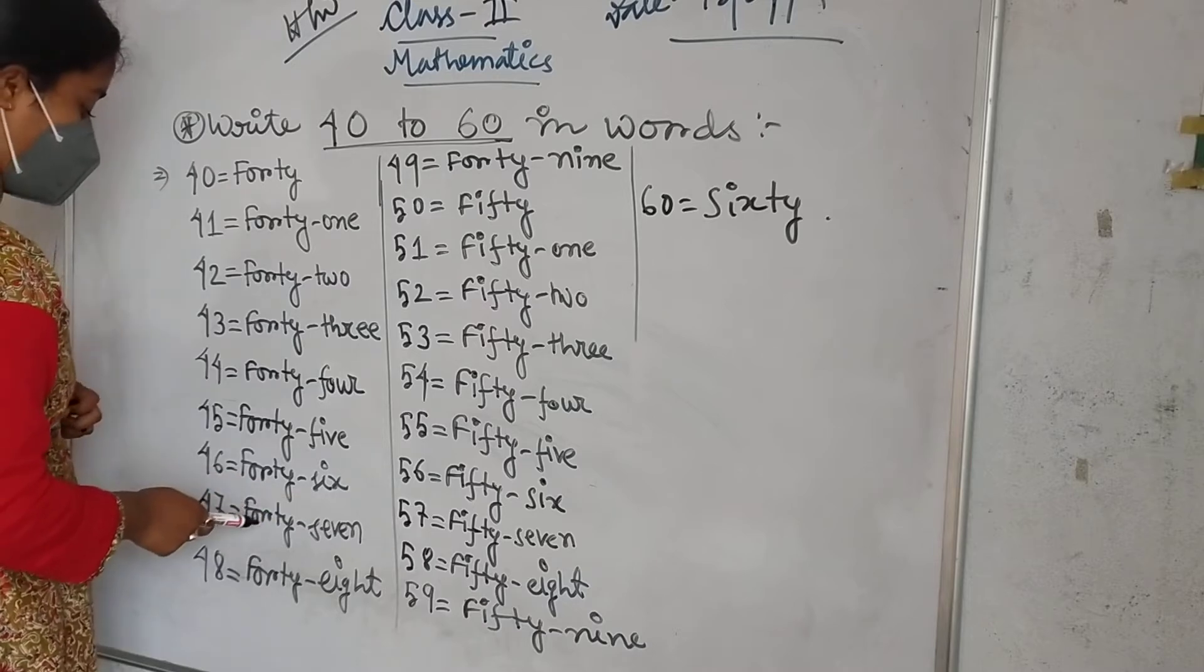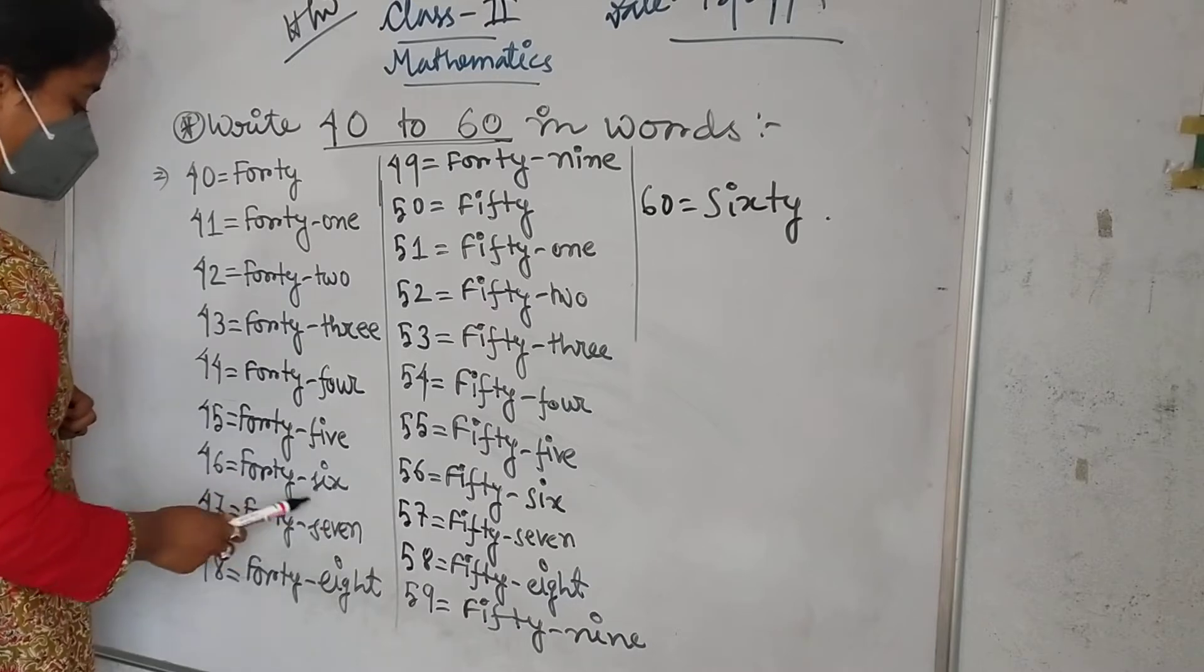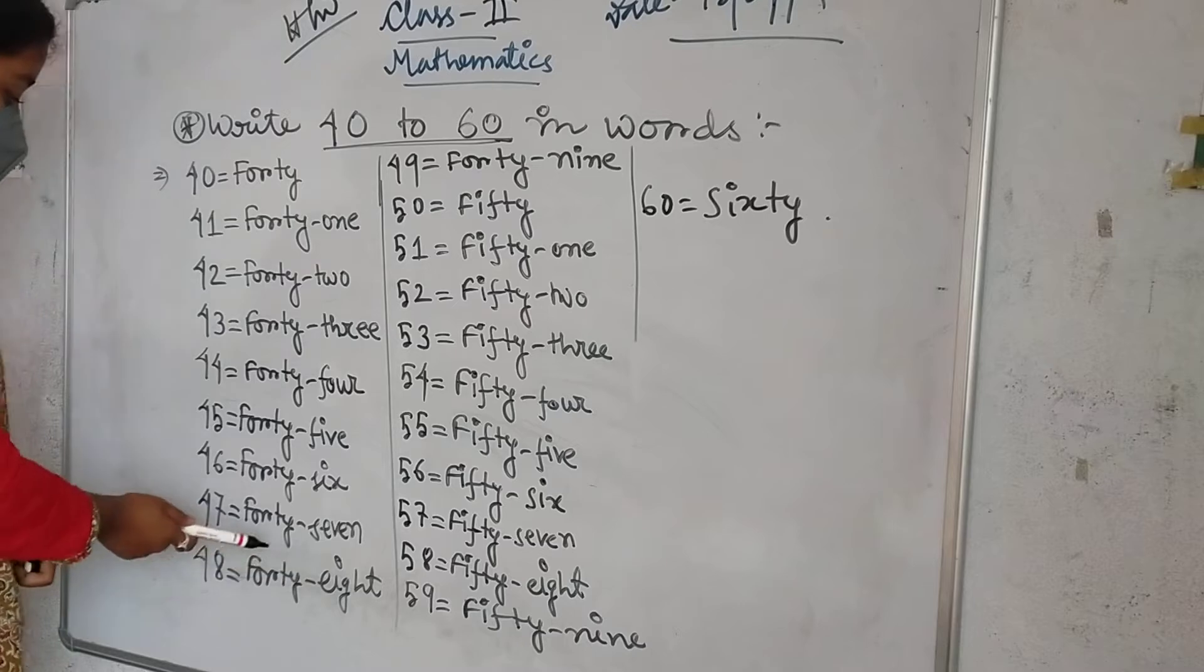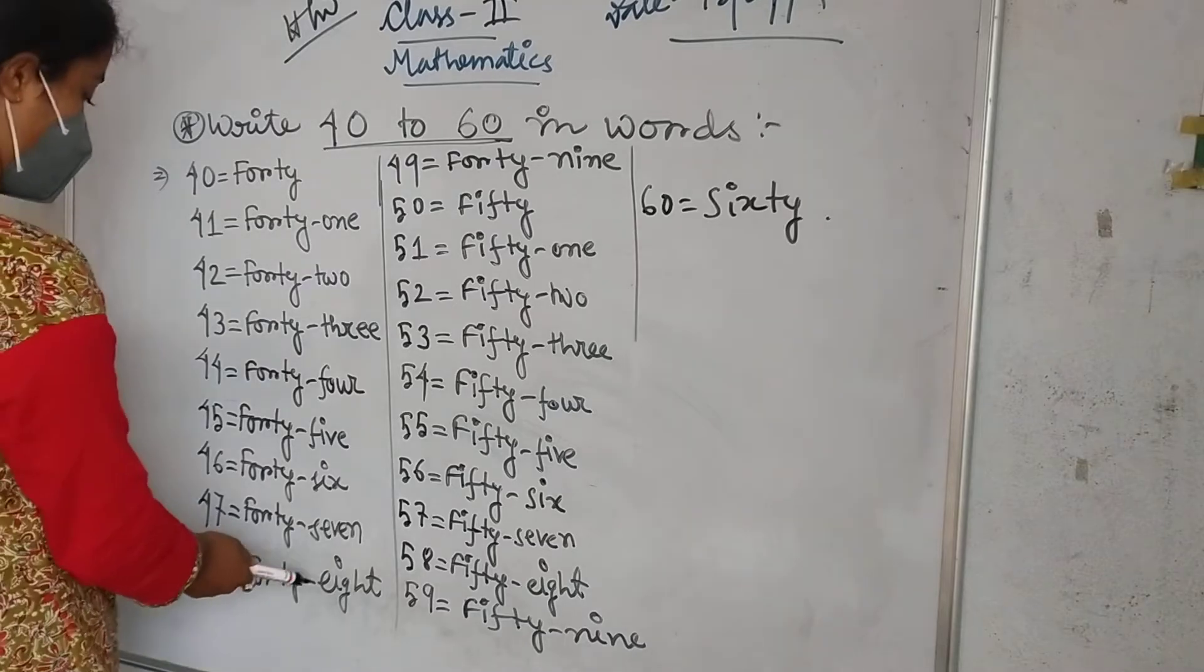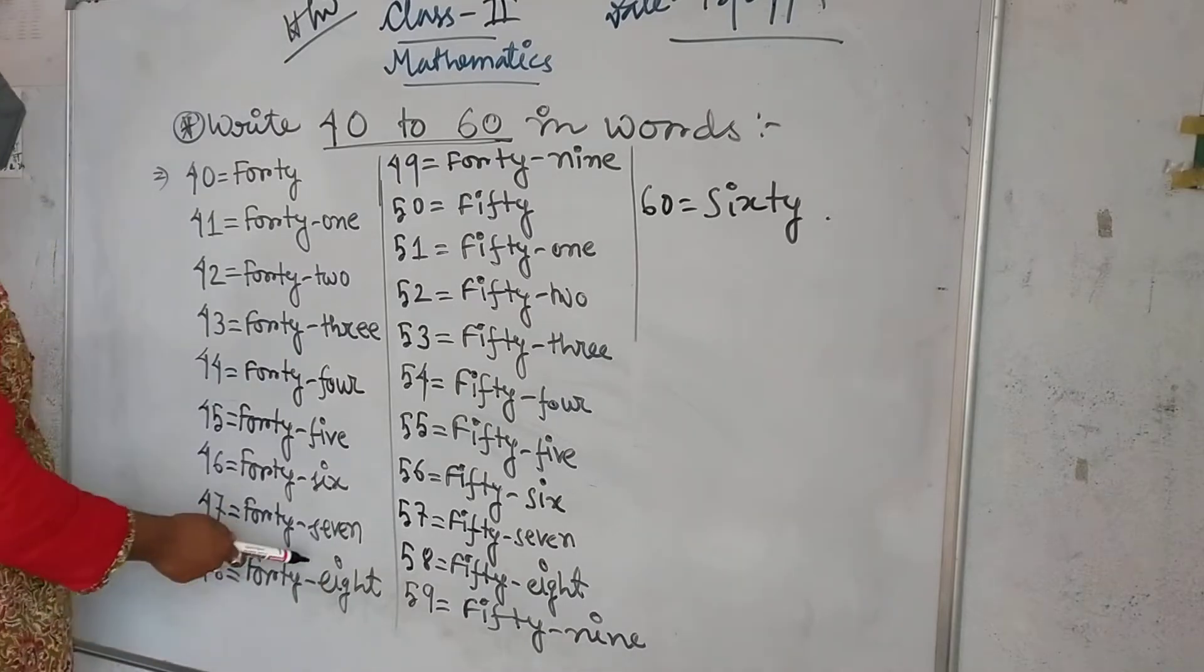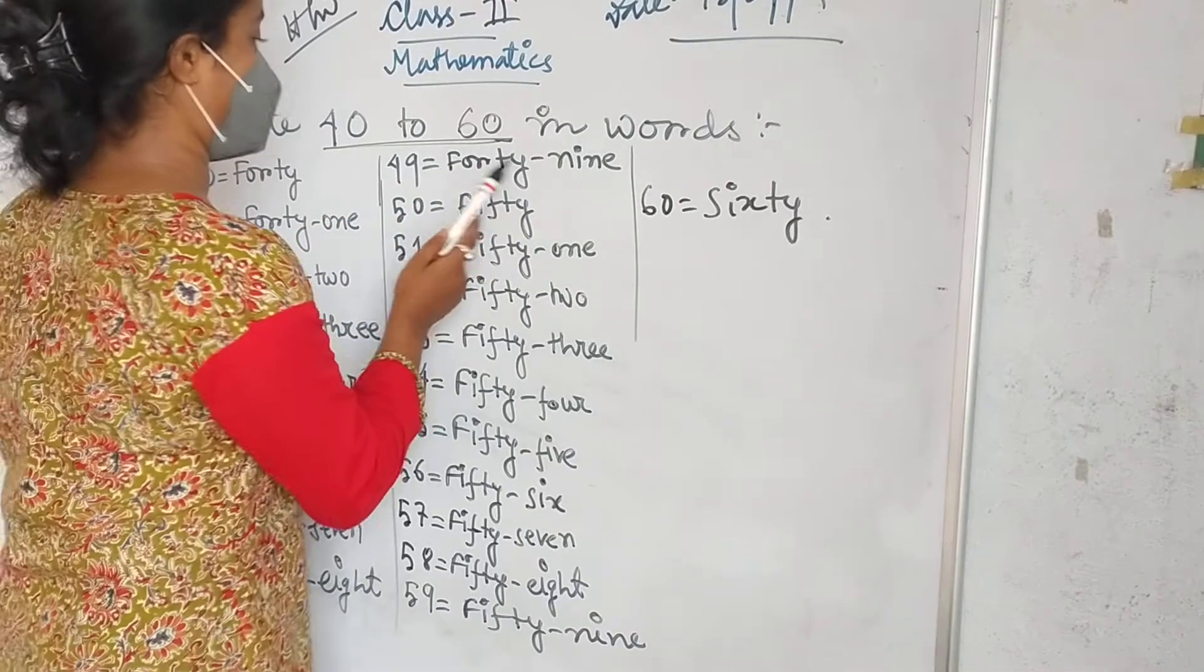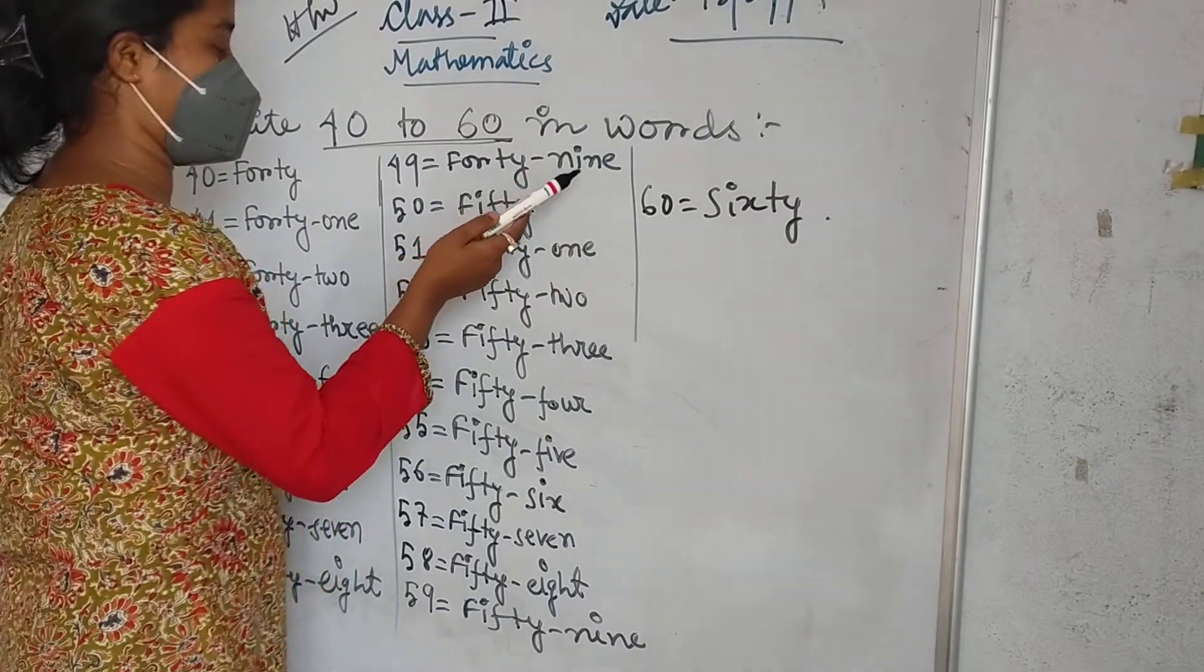Then 47: F-O-R-T-Y, forty, S-E-V-E-N, seven, forty-seven. Then 48: F-O-R-T-Y, forty, E-I-G-H-T, eight, forty-eight. Okay? Then 49: F-O-R-T-Y, forty, N-I-N-E, nine, forty-nine.